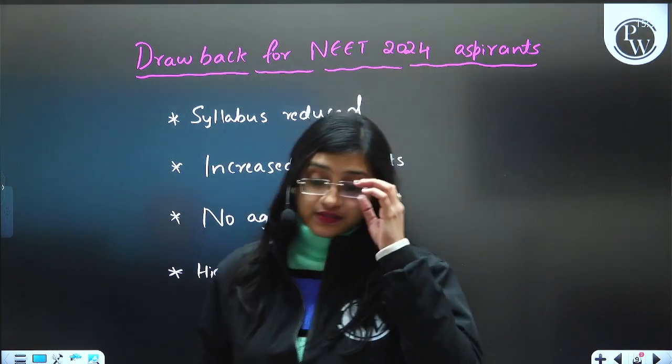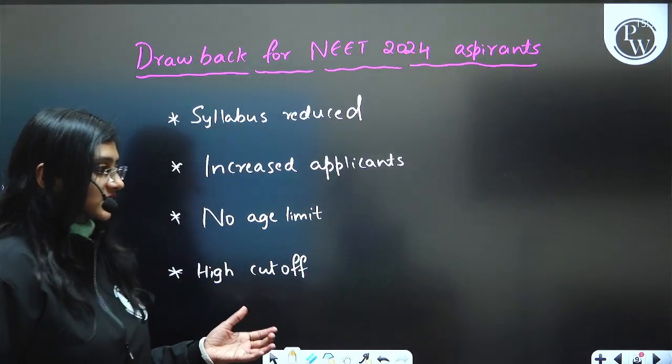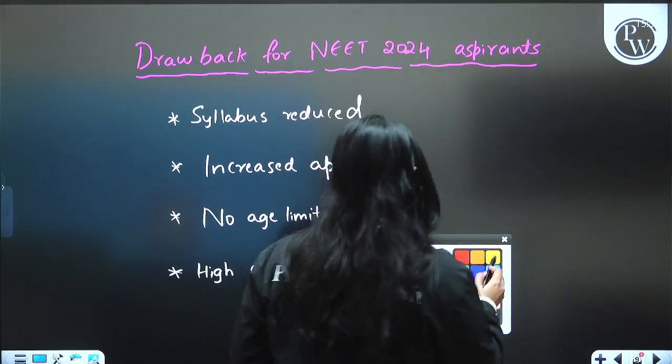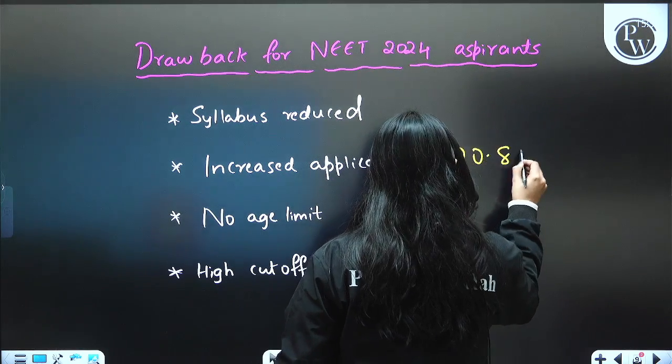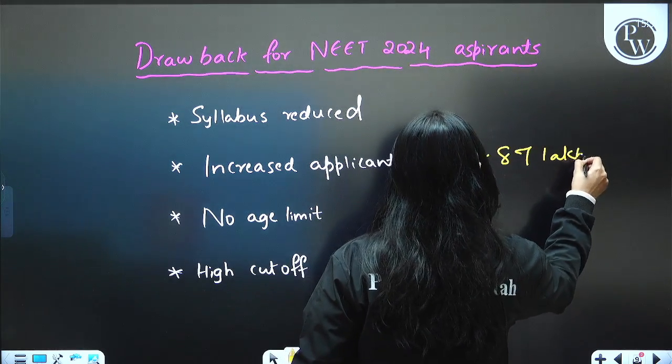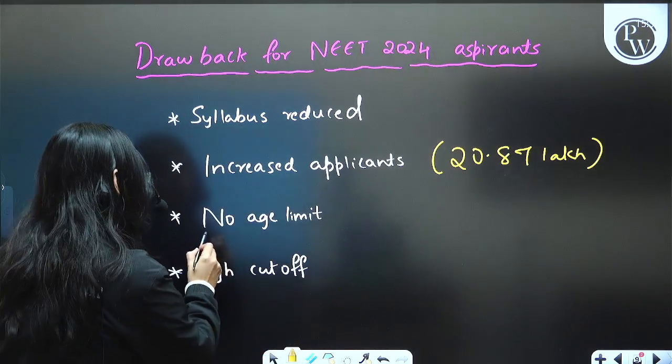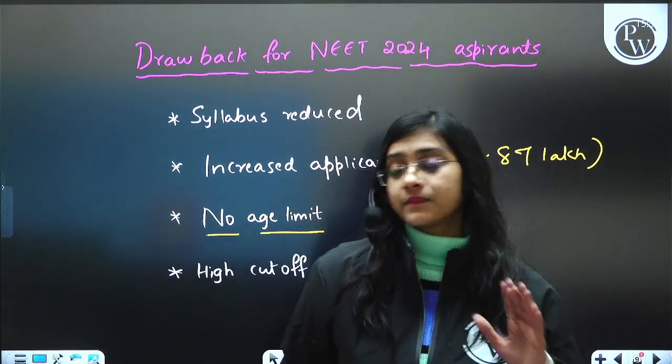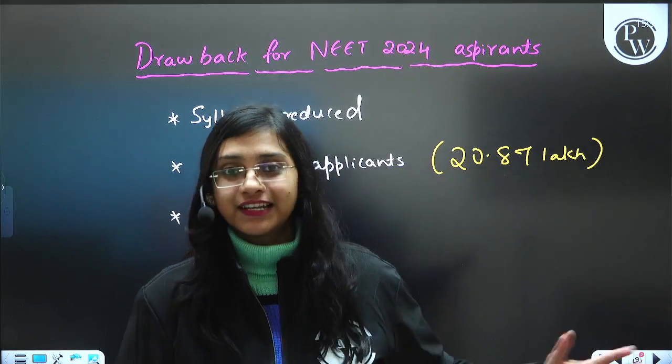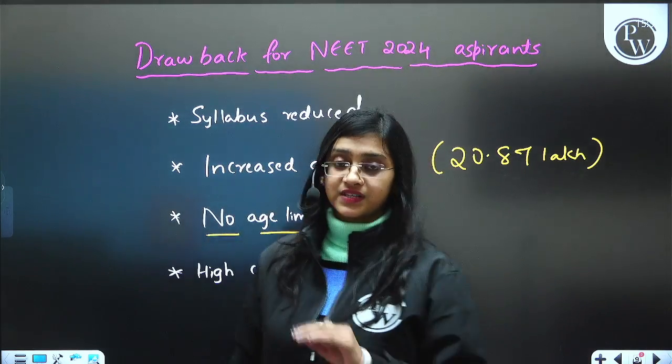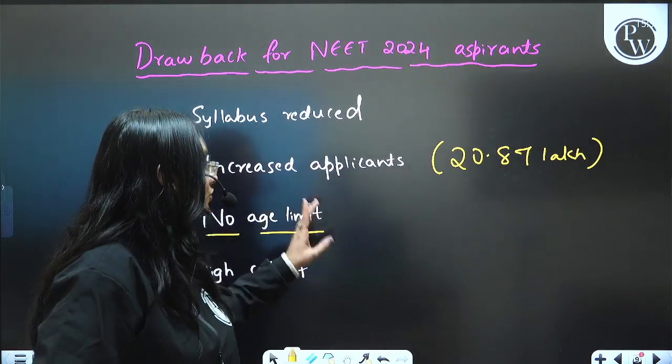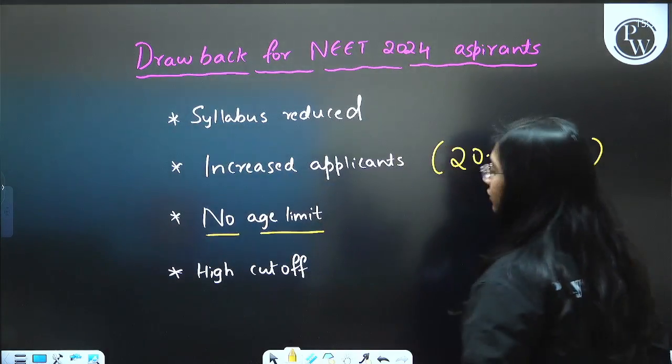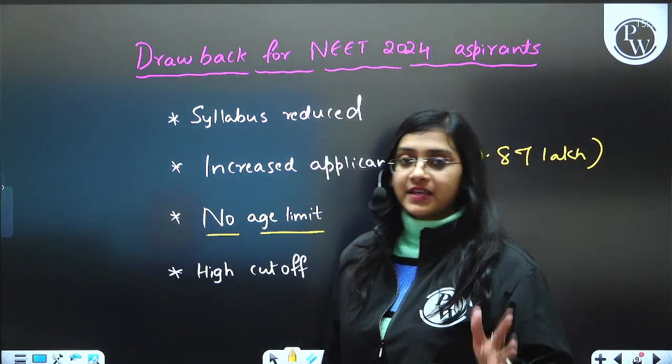And increased applicants. So, this year application has been just started. Last year the applicants were approximately 20.87 lakh. This year it will definitely increase because there is no age limit for NEET exam. Anybody can write NEET exam, not just you, your parents can also write NEET exam. Even I can write NEET exam because there is no age limit. So, number of applicants is going to be definitely more and there is going to be very high cutoff because of all of these.